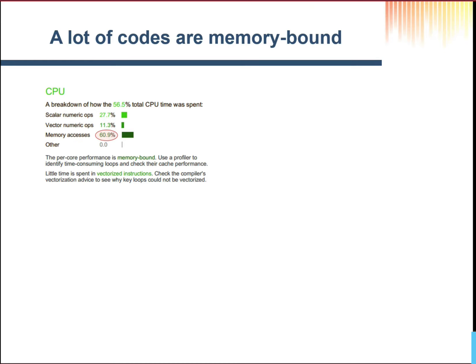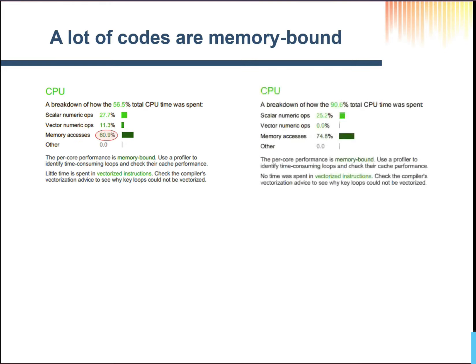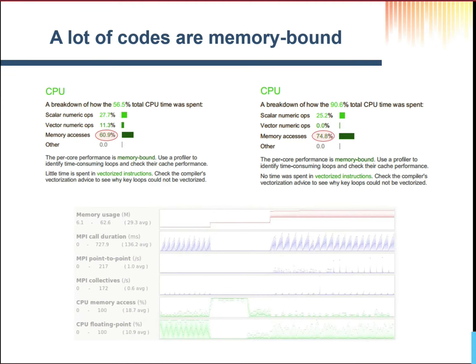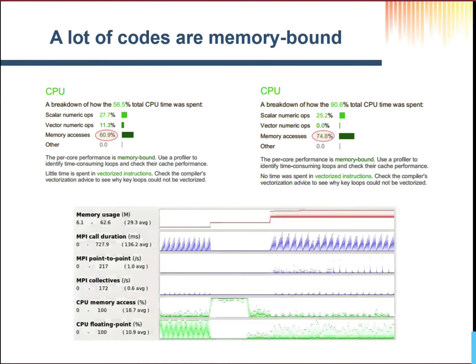CP2K is spending about 60–61% of its time just accessing memory. Another one — it could be OpenFOAM — 74%. These are significant amounts of time. When the machine is accessing memory, is it just doing nothing, waiting?